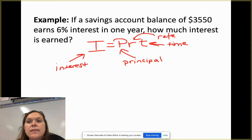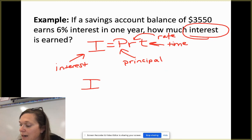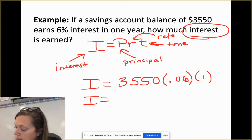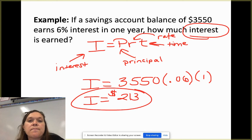So if a savings account balance of $3,550 earns 6% interest in one year, how much interest? So how much interest? That's what we're solving for. So we're solving for I. My principal is my balance, so $3,550. My rate is 6%, so 6% as a decimal is 0.06. And we have our time being 1. So now it's just calculator work. So $3,550 times 0.06 times 1 tells me that my interest earned would be $213. Do you remember that formula? Hopefully you do.